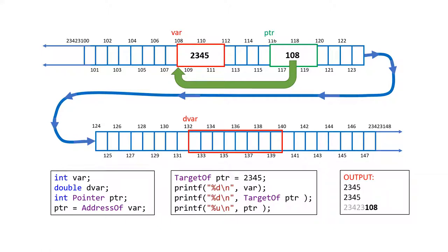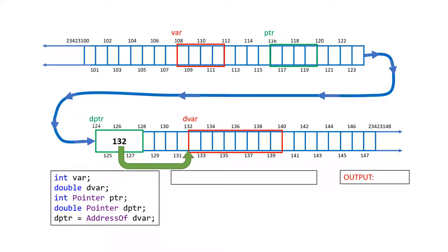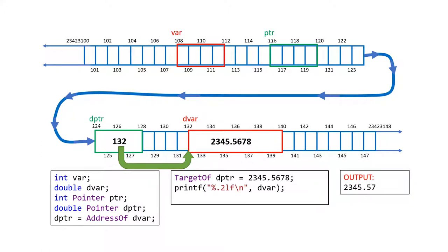If I want to do the same thing with a double variable, I cannot use the integer ptr — I have to create a new pointer for the double. The size of the pointer is the same, four bytes, because an address is an address. But this one is a double pointer, which means the address is pointing to a double in memory, not an integer. So the compiler knows that for 'dptr', if I want to put something at the target, it has to be eight bytes. Therefore setting the value will work correctly.